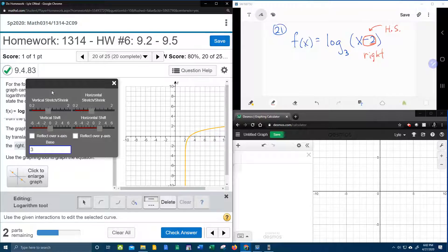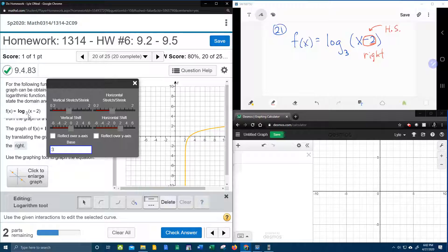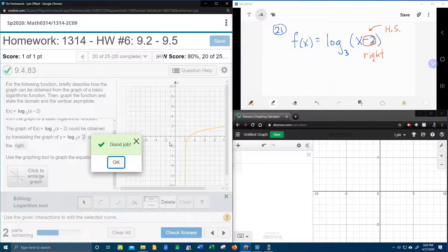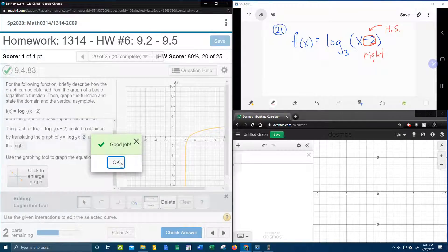Make sure that the base is correct. Right? A base of 3, so we've got a base of 3, we've got our horizontal shift, we're going to check that, and that is correct.